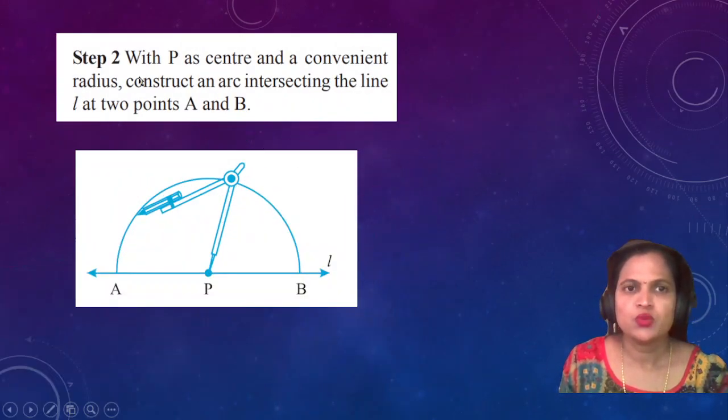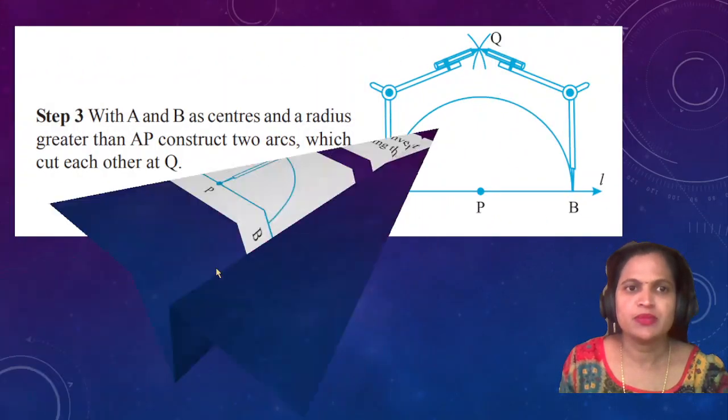Then Step 2: With P as a center, keeping P as a center, with a convenient radius, construct an arc intersecting the line L at two points A and B. You draw this arc with the help of the compass.